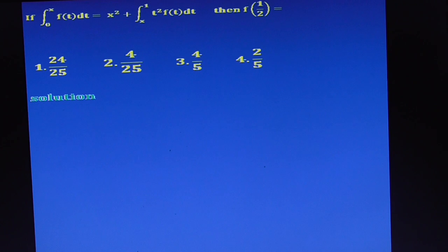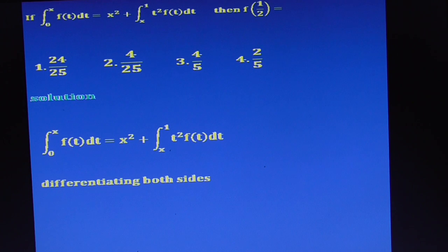The given equation is an integral with f(t), and we have to calculate f(t). For this, first we have to differentiate the given integral equation. This is a definite integral equation. To get f(t), we have to differentiate this. Now differentiate on both sides.